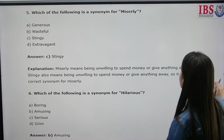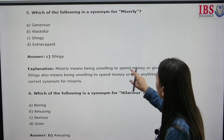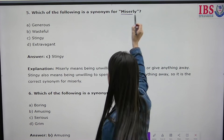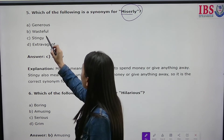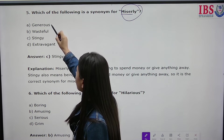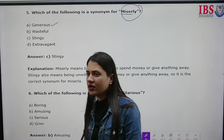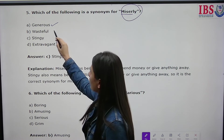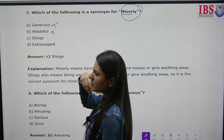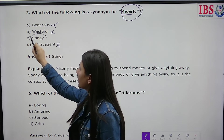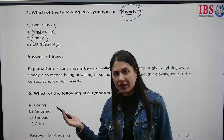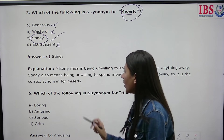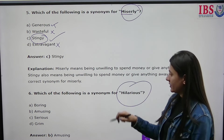Which of the following is a synonym for 'miserly'? The options are generous, wasteful, extravagant, and stingy. Generous means someone who gives a lot — that is not miserly. Wasteful means prone to wasting things. Extravagant means someone who spends too much. You can use the elimination method, and the answer is stingy.